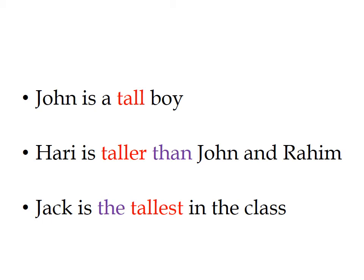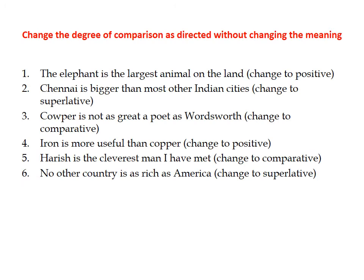All other boys are shorter than Jack, so 'the tallest' is the superlative degree. To recap: 'John is a tall boy' — positive degree. 'Harry is taller than John and Raheem' — comparative degree. 'Jack is the tallest in the class' — superlative degree.